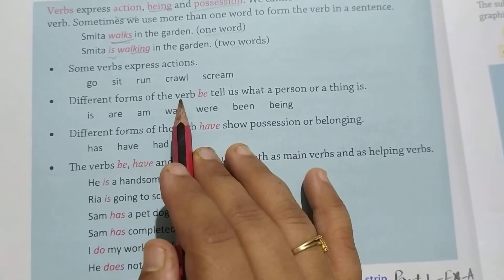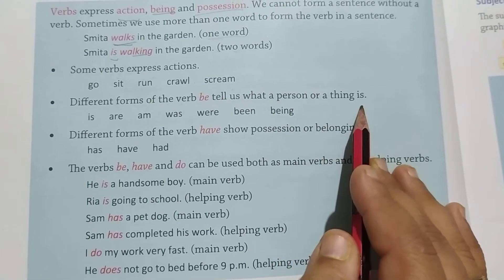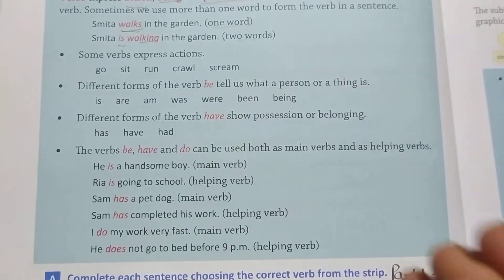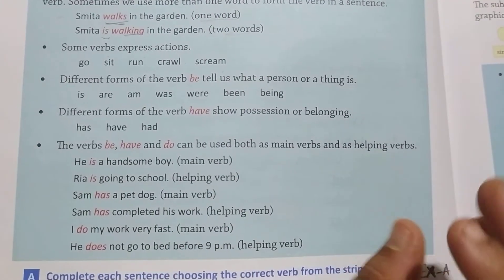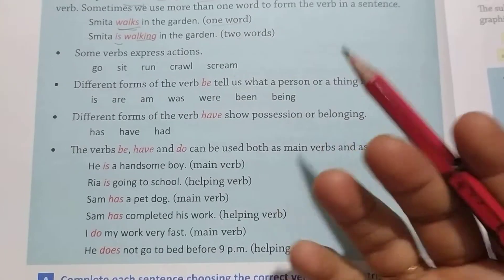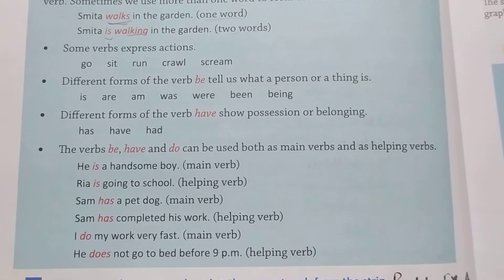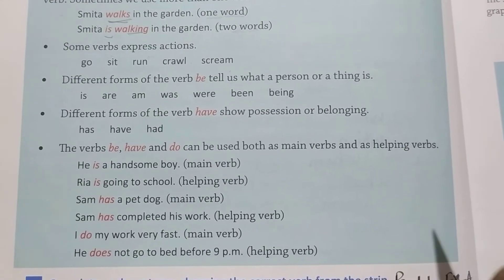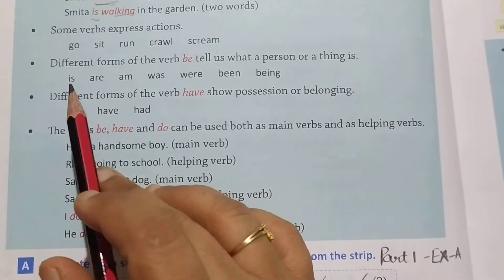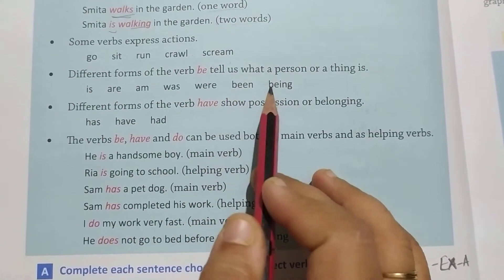Different forms of the verb 'be' tell us what a person or a thing is. Jise kai baar jo hummare auxiliary verbs hote hain, that is helping verbs, wo hummye person ke baare mein batate hain — action kya kar rahi hai, phir konse tense mein hain. Jaise: is, are, am, was, were, been, being.